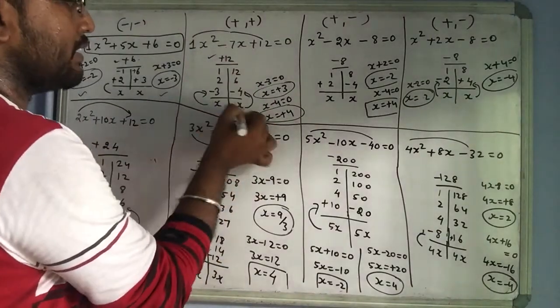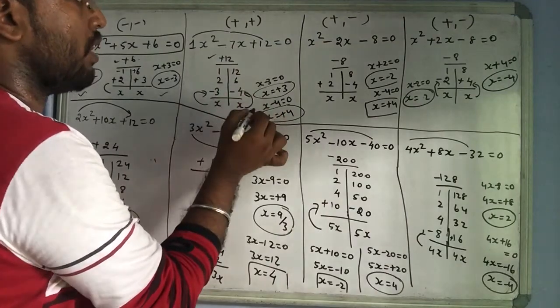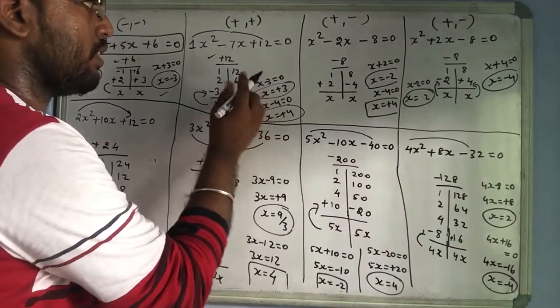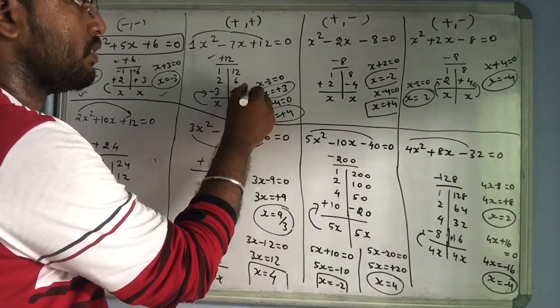If you factor it, x times x, then (x - 4)(x - 3). When x - 3 is equal to 0, then x is equal to plus 3. If x - 4 is equal to 0, then x equals plus 4.